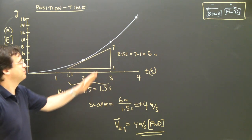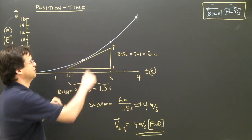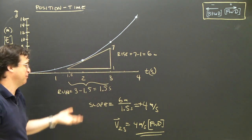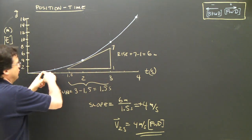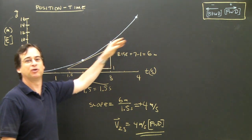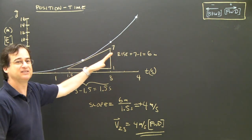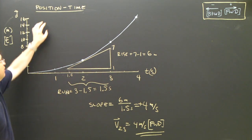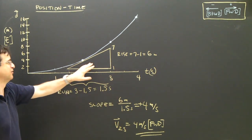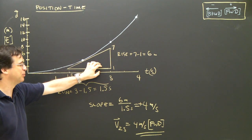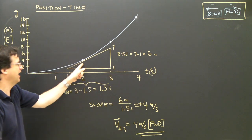Now I can do the same thing over here at 3 seconds. Draw a triangle, find the rise, find the run, and it will be a bigger number. It might be 6 meters per second. And I can do it over here at 1. If I was doing a number of these, I'd make the triangle smaller or overlap them. But the slope of a position-time graph is the velocity. If it's a curve, you draw a tangent, find the slope of the tangent, and that is the velocity at 2 seconds.